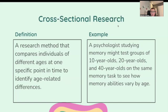Cross-sectional research is a research method that compares individuals of different ages at one specific point in time to identify age-related differences. For example, a psychologist studying memory might test groups of 10-year-olds, 20-year-olds, and 40-year-olds on the same memory task, to see how memory abilities vary by age.